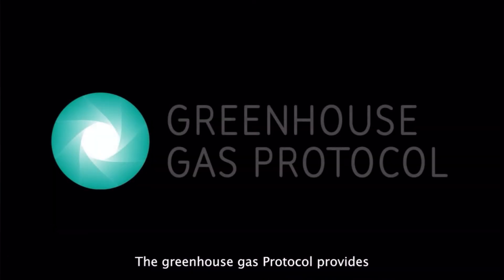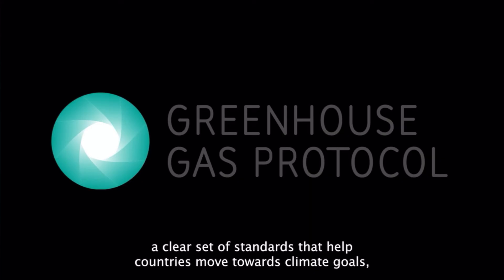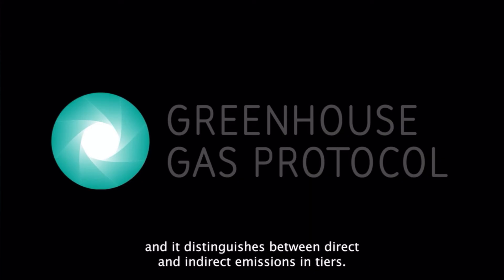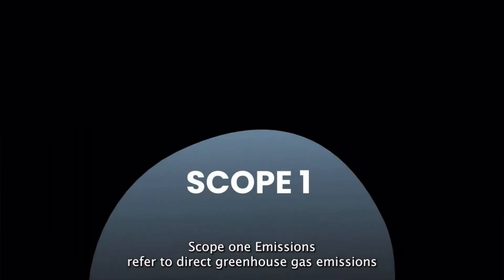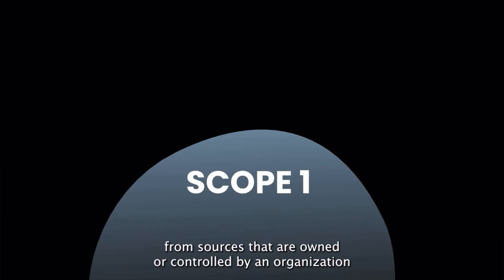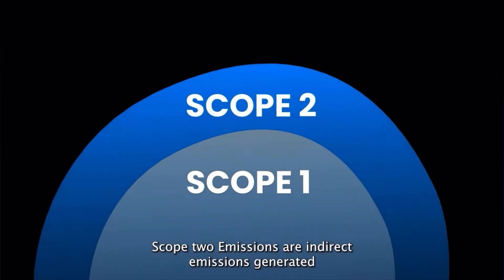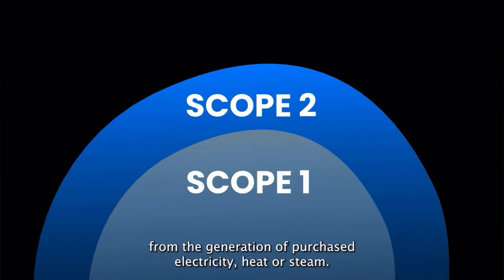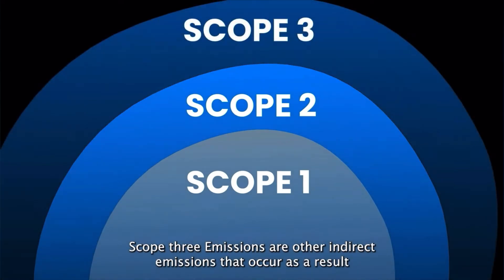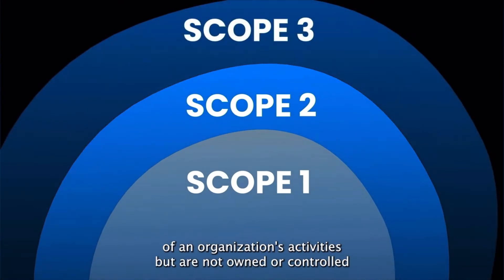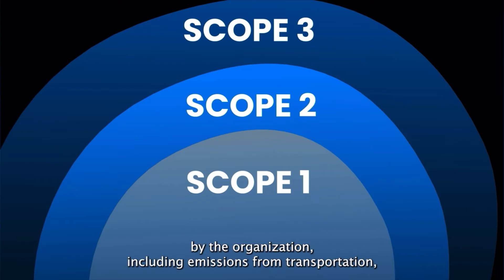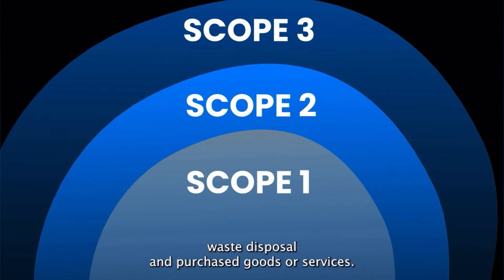The Greenhouse Gas Protocol provides a clear set of standards that help countries move towards climate goals, and it distinguishes between direct and indirect emissions in tiers. Scope 1 emissions refer to direct greenhouse gas emissions from sources that are owned or controlled by an organization, such as on-site combustion of fossil fuels. Scope 2 emissions are indirect emissions generated from the generation of purchased electricity, heat, or steam. Scope 3 emissions are other indirect emissions that occur as a result of an organization's activities but are not owned or controlled by the organization, including emissions from transportation, waste disposal, and purchased goods or services.